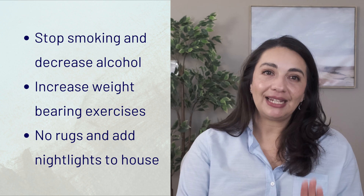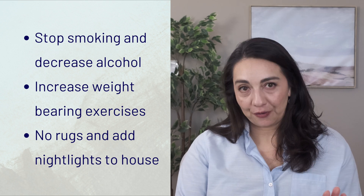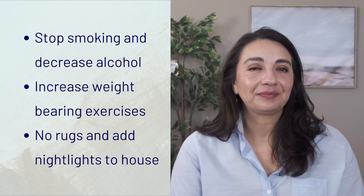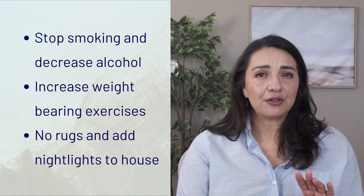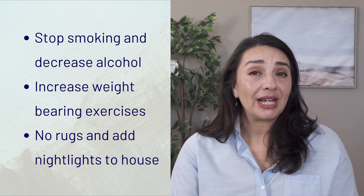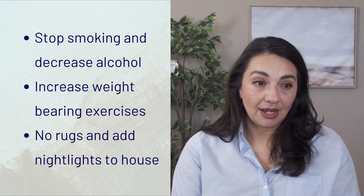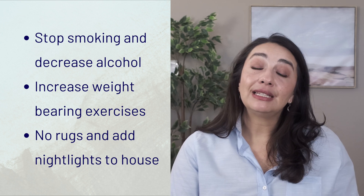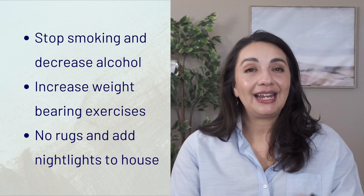Number one: stop smoking and decrease your alcohol use. You also want to increase your weight-bearing exercise. This is exactly why astronauts get osteoporosis — without gravity to push through, their muscles don't work as hard as they do on earth, and thus they develop osteoporosis. To prevent falls, look around your house and make sure any dark corners or areas where you can't see the floor are illuminated with night lights. Make sure you don't have rugs with corners that are easy to trip on, and limit the number of steps both inside and outside your house.